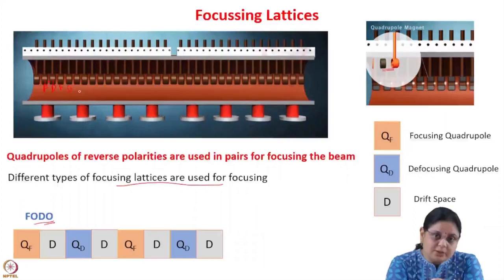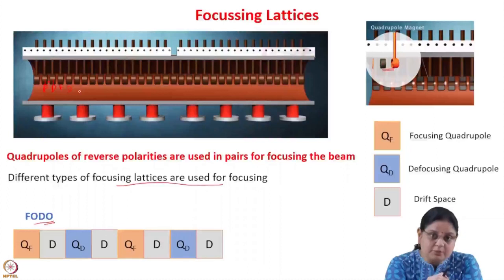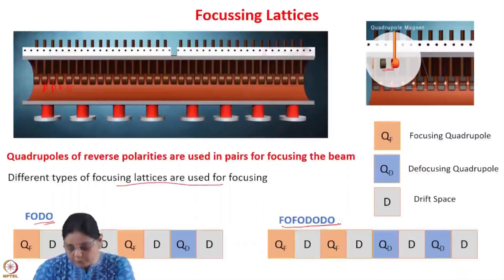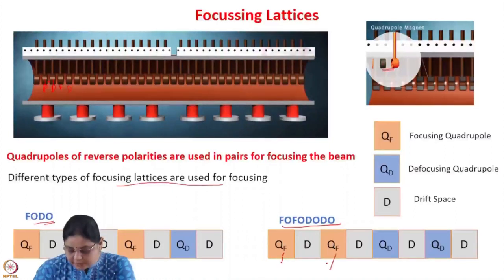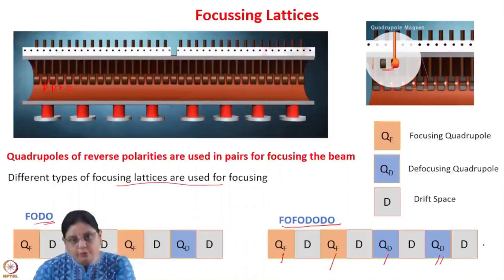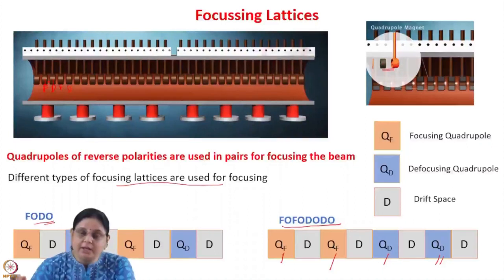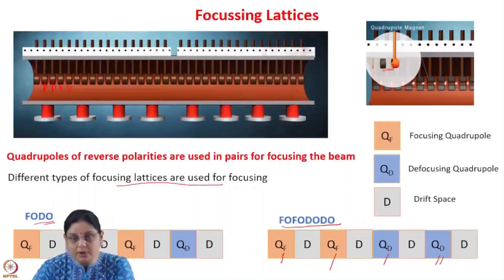Remember, if this quadrupole is focusing in the x direction, for the y direction it will be defocusing. But the overall combination of such quadrupoles will always produce focusing in both directions. We can also use a FOFODODO type of lattice for focusing, where in one drift tube we have a focusing quadrupole, in the next one again a focusing quadrupole, followed by two defocusing quadrupoles and so on. You can arrange the quadrupoles in various combinations as long as you have both a focusing and a defocusing quadrupole, and the net result will be focusing in both directions.